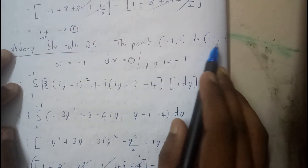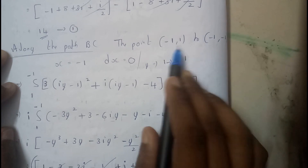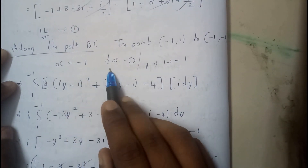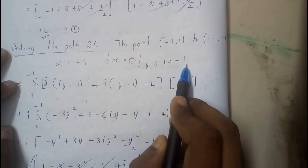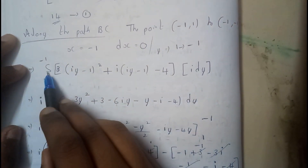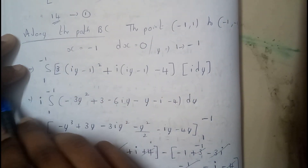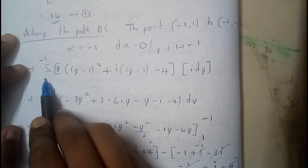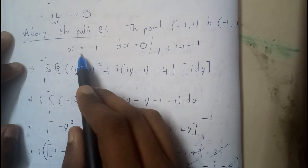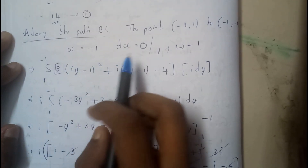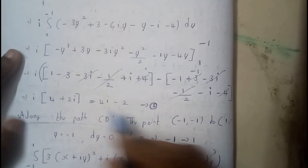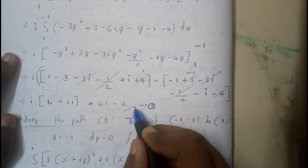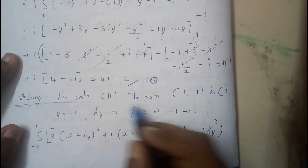Along path BC, between points (−1,1) and (−1,−1), x is constant: x = −1, so dx = 0, and y varies from 1 to −1. Writing the equation and converting all values in terms of y, then applying integration gives us the value for this side.